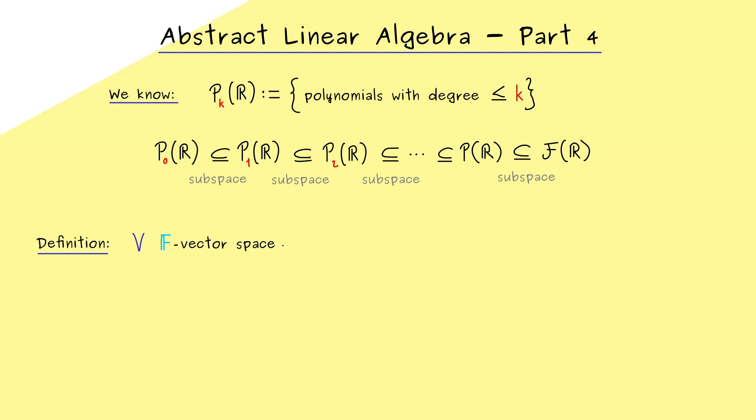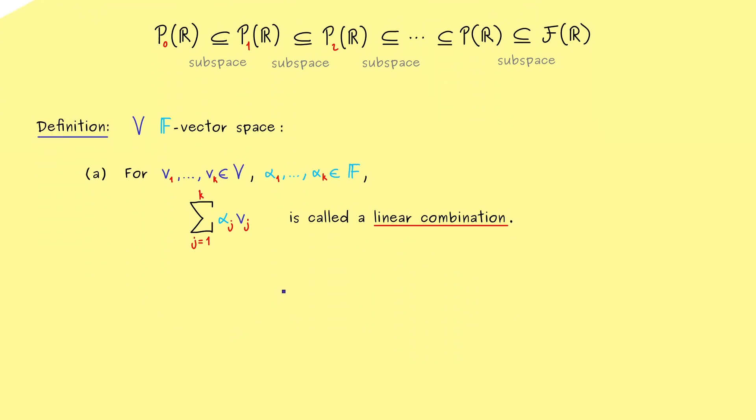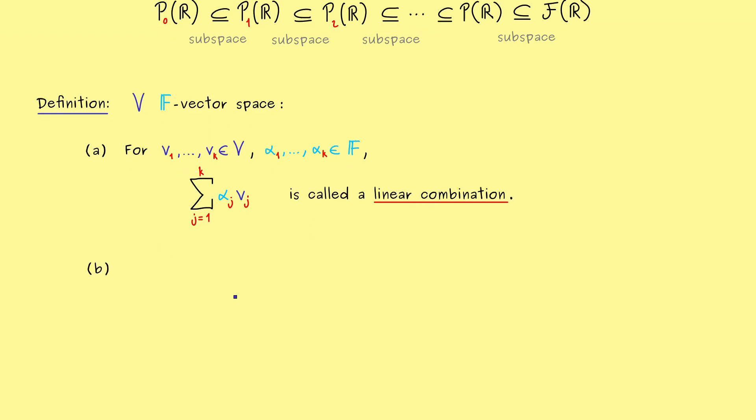So instead of R^n or C^n we now consider a general F vector space V. And the first thing I want to define here is a general linear combination of k vectors. So you see v_1 to v_k are elements from the vector space V and alpha_1 to alpha_k are elements from the field F. And now a general linear combination just combines the scalar multiplication with the vector addition. So in short we can just write a sum symbol and put alpha_j times v_j into the sum. And then we just go from 1 to k to have the whole sum.